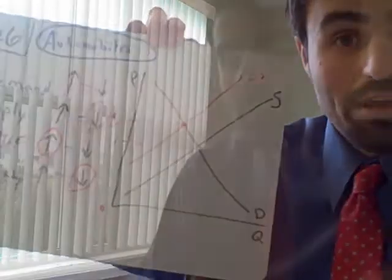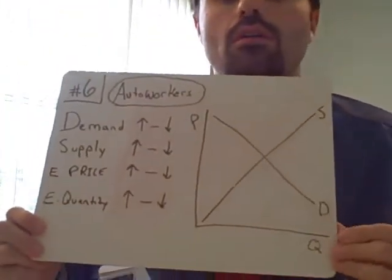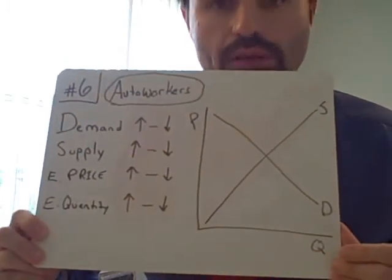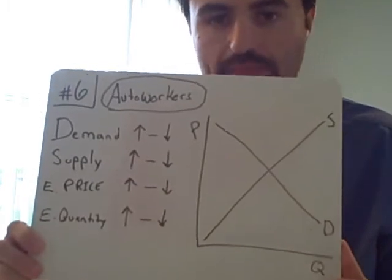Step four. Auto workers. Almost done. Almost finished this one. Auto workers, what we're looking at. Now, you just looked at automobiles. Automobiles, auto workers, it's right in the same thing. Now, the challenge is deciding if it's supply or demand.